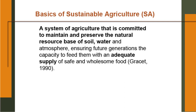A system of agriculture that is committed to maintain and preserve the natural resource base of soil, water and atmosphere — these three components are of course the natural resources — ensuring future generations the capacity to feed themselves with an adequate supply of safe and wholesome food. Such definitions are available for sustainable agriculture, which basically aims to ensure food security and all other needs of the present population without compromising the security of future generations, meaning they should also get sufficient resources.